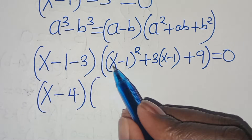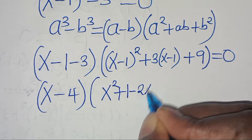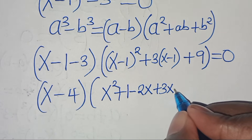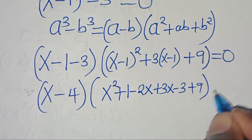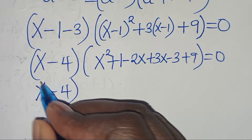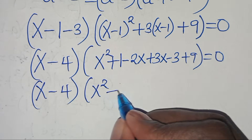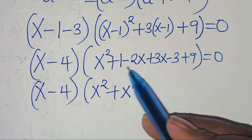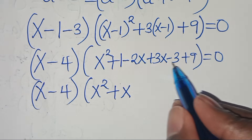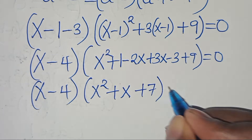Expanding (x minus 1)^2 gives x^2 + 1 minus 2x. Opening the parentheses for plus 3(x minus 1) gives plus 3x minus 3, then plus 9. Combining terms: x^2 minus 2x plus 3x is plus x, and 1 minus 3 plus 9 is plus 7. So we have (x minus 4)(x^2 plus x plus 7) equals 0.